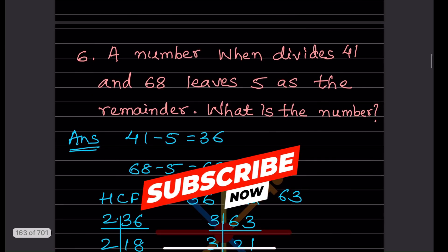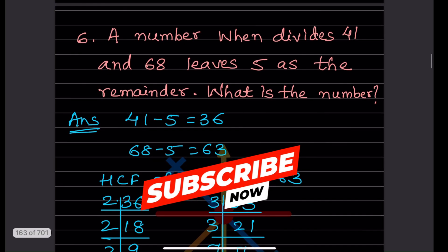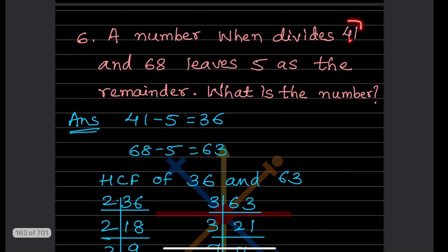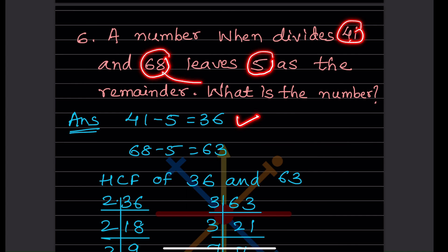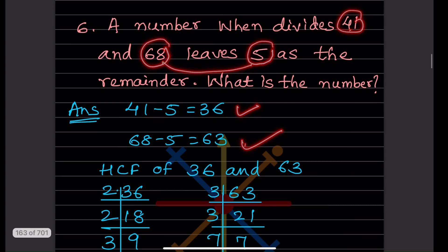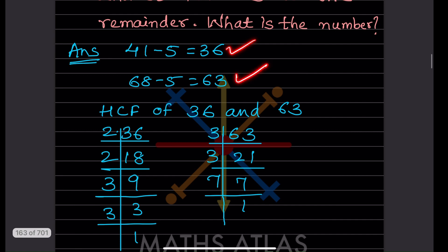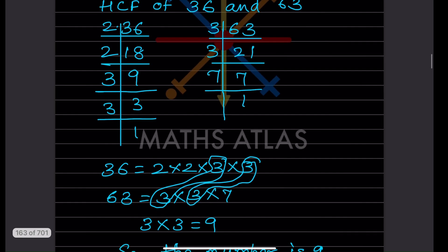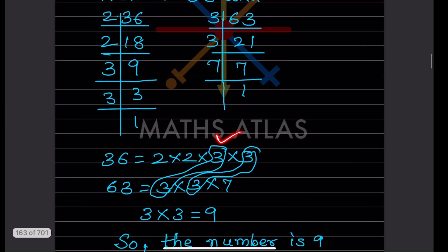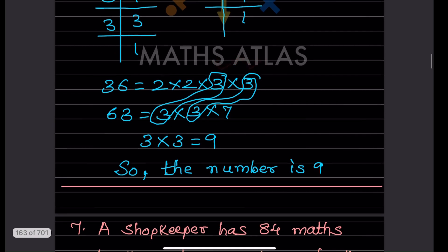Problem: a number when it divides 41 and 68 leaves 5 as the remainder. What is the number? Subtract the remainder: 41 − 5 = 36 and 68 − 5 = 63. Find the HCF of 36 and 63. The common factor is 3 × 3 = 9. So the number is 9.